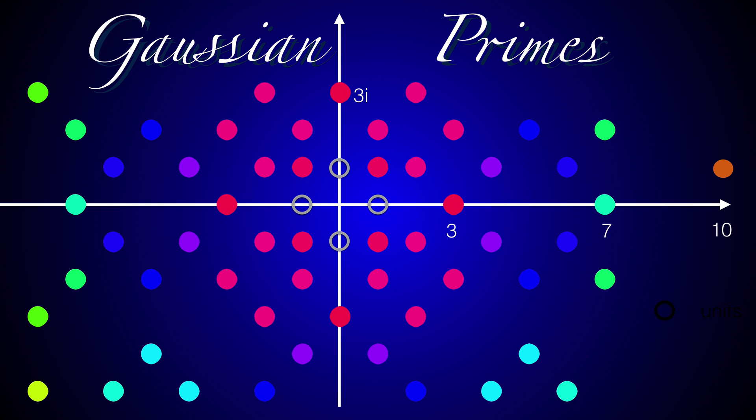Up to n=10 there are 2 real primes and 5 almost real primes. For example, 2+i is an almost real prime because 2²+1²=5 is prime.